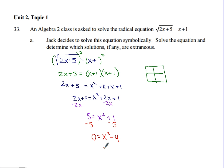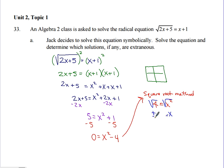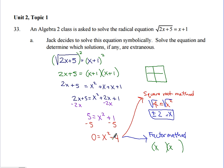We're close to an answer. Using the square root method: add 4 to both sides to get x squared equals 4, then square root both sides to get x equals plus or minus 2. Alternatively, using the factor method, x squared minus 4 is a difference of two perfect squares, factoring as (x+2)(x-2), giving x equals positive 2 and x equals negative 2.